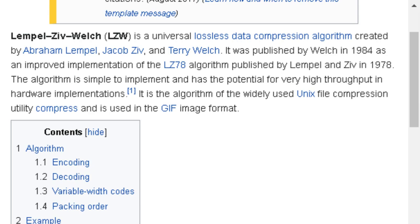Lempel-Ziv-Welch, LZW, is a universal lossless data compression algorithm created by Abraham Lempel, Jacob Ziv, and Terry Welch. It was published by Welch in 1984 as an improved implementation of the LZ78 algorithm published by Lempel and Ziv in 1978. It is used in the GIF image format.